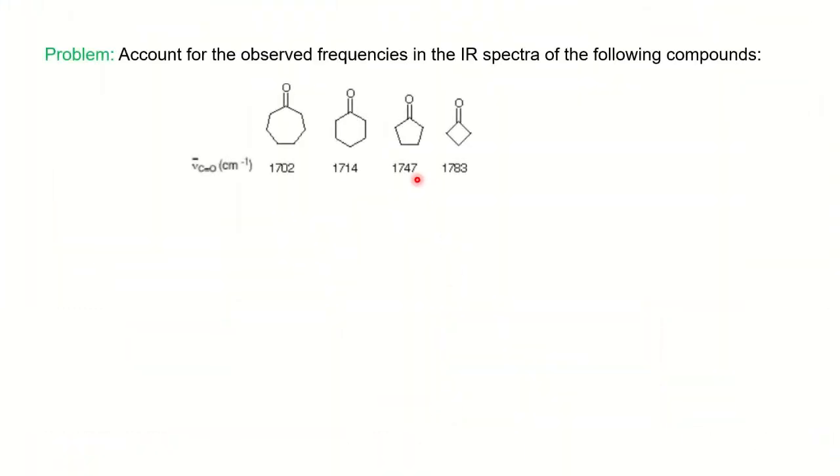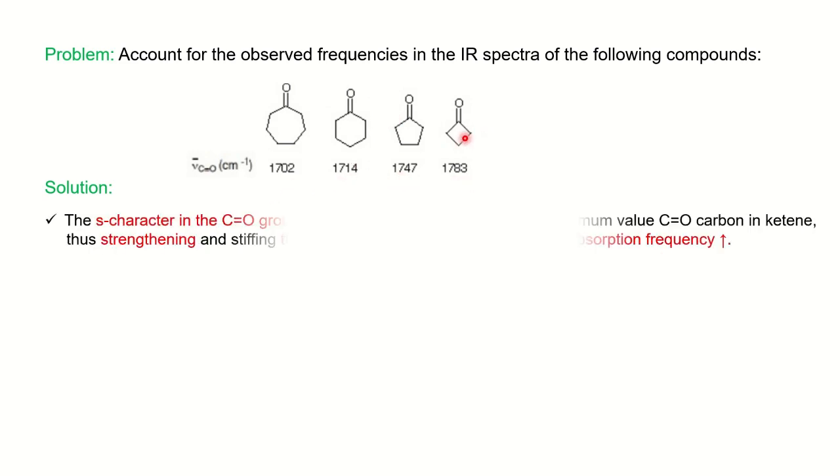Let's see a previous year question from an M.Sc. question paper: Account for the observed frequencies in IR spectra for the given compounds. You can notice here different ring sizes having a carbonyl group, and the frequency is increasing as the ring size decreases.